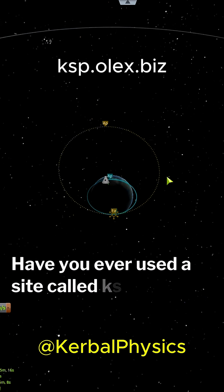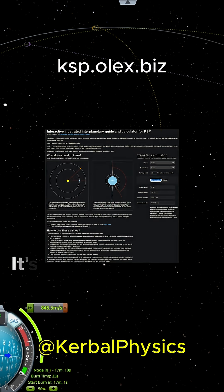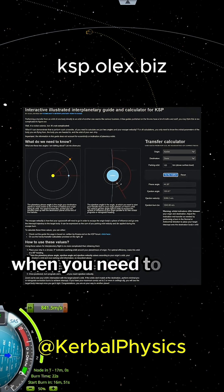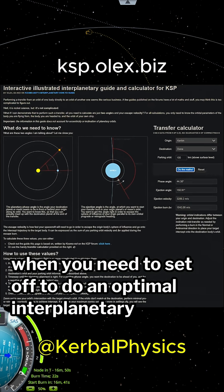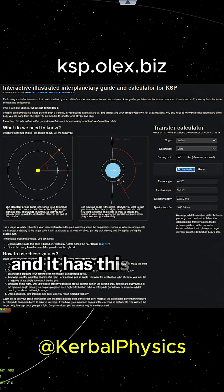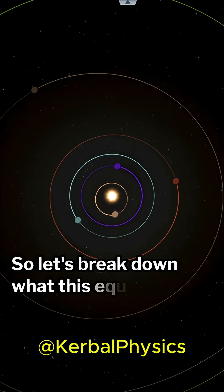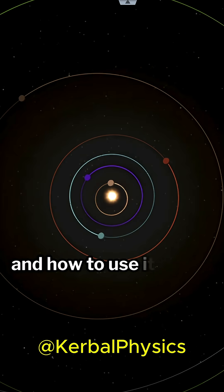Have you ever used a site called ksp.olex.biz? It's super useful for showing you when you need to set off to do an optimal interplanetary transfer. And it has this equation built into it. So let's break down what this equation really means and how to use it.